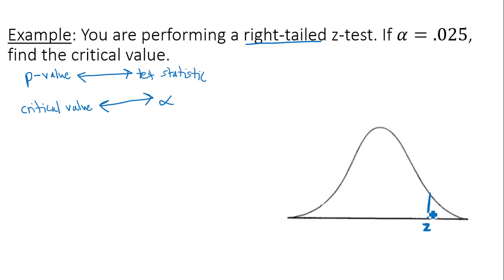Your critical value is going to be the value separating the tail from the rest of the graph. It's a right-tailed test, so my tail is over here on the right-hand side. Alpha is the area of the tail. In this case, that would be 0.025.